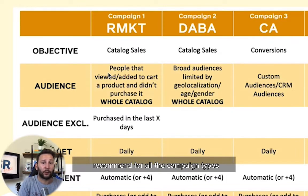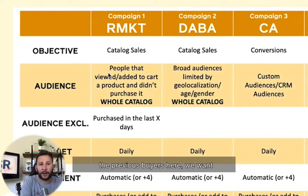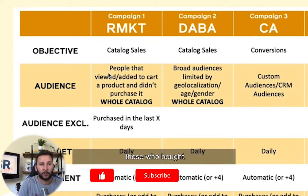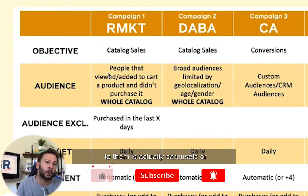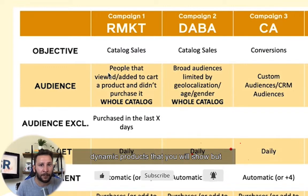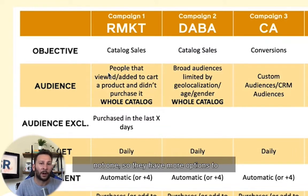For all the campaign types we are going to talk about here, the budgets are daily and we need to exclude previous buyers — we don't want to include those who actually bought items. What we can show to them is carousels or collections, still the catalog, still dynamic products that you will show, but you can choose a carousel or a collection rather than just one product, so they have more options to choose from.